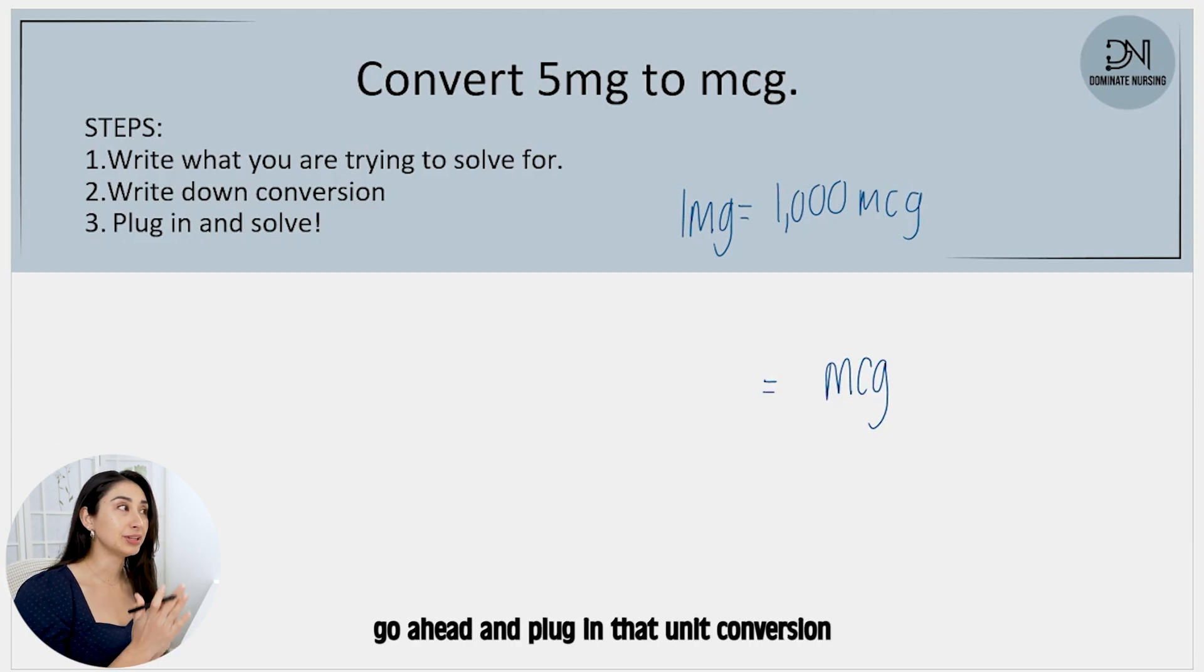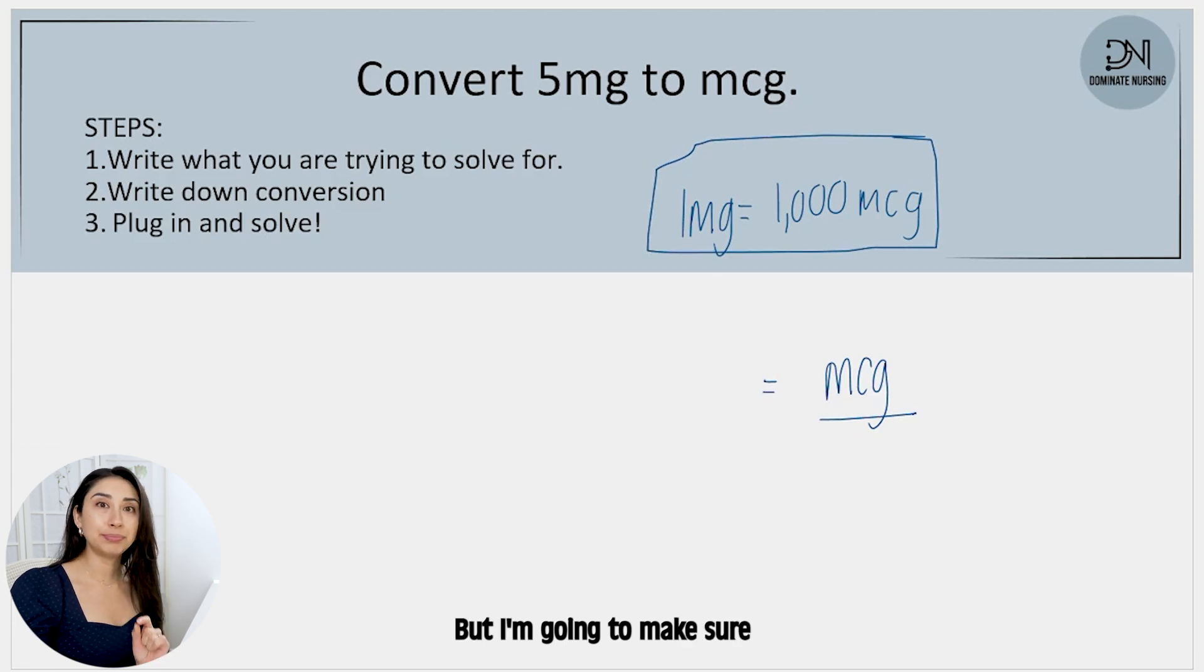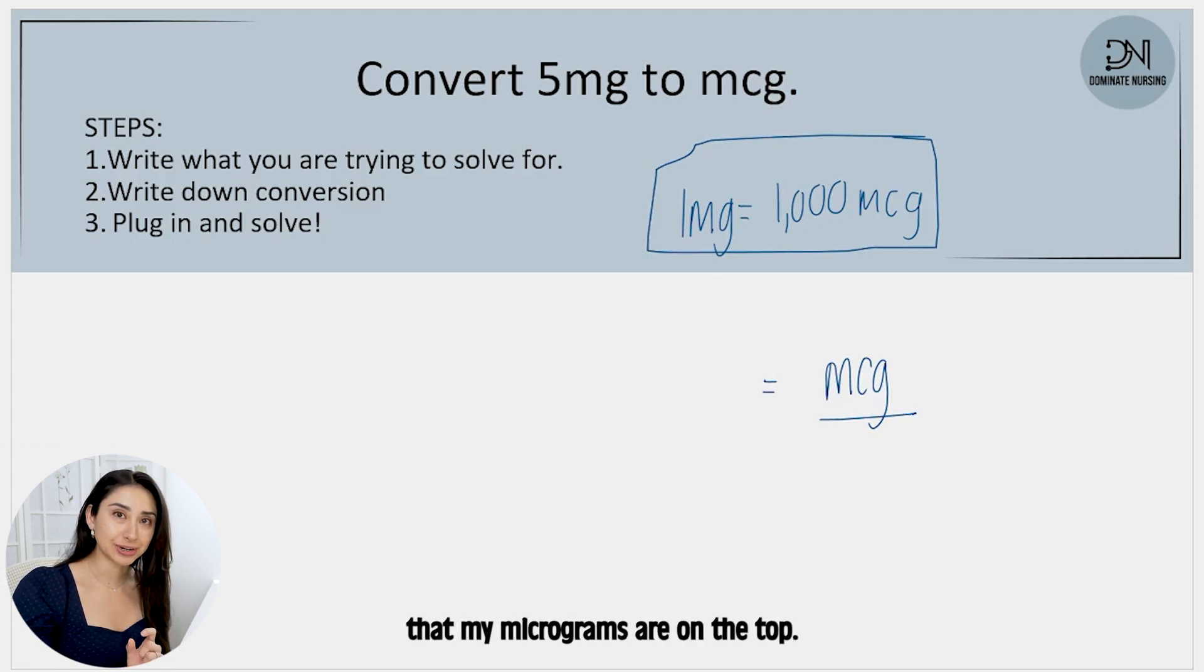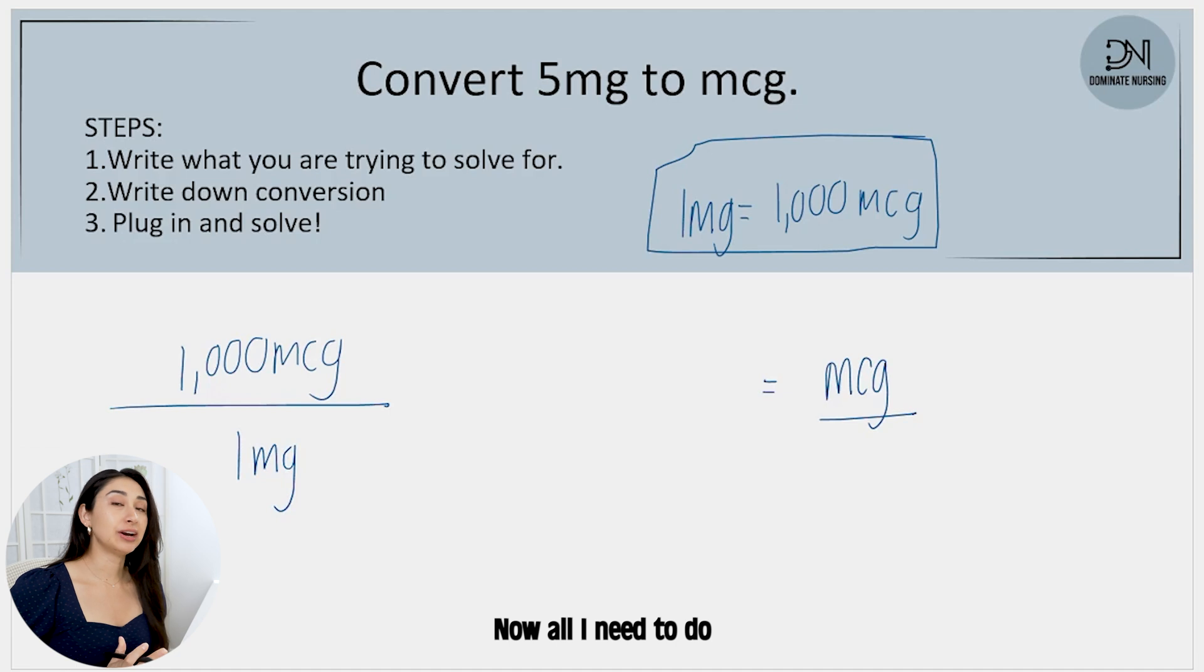So now knowing that, I can go ahead and plug in that unit conversion based on what I'm trying to solve for. I'm trying to solve for micrograms. So using this unit conversion here, I'm going to plug that in, but I'm going to make sure that my micrograms are on the top. And that is your biggest hint. So I'm going to put 1000 micrograms over 1 milligram. Now all I need to do is cancel out my milligrams.